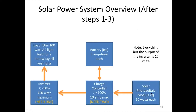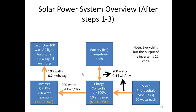Let's review what we've done so far. We found we need one inverter and two charge controllers. Going to the load is 100 watts when it's on, and the energy needed is 0.2 kilowatt-hours per day. When the light bulb is on, the inverter draws 200 watts from the charge controller, and the energy coming from the charge controller is 0.4 kilowatt-hours per day. So we need to supply that 0.4 kilowatt-hours per day either from the battery or from the solar module.